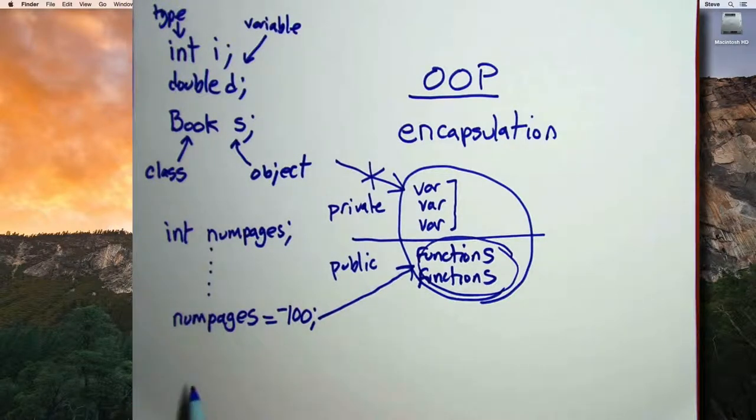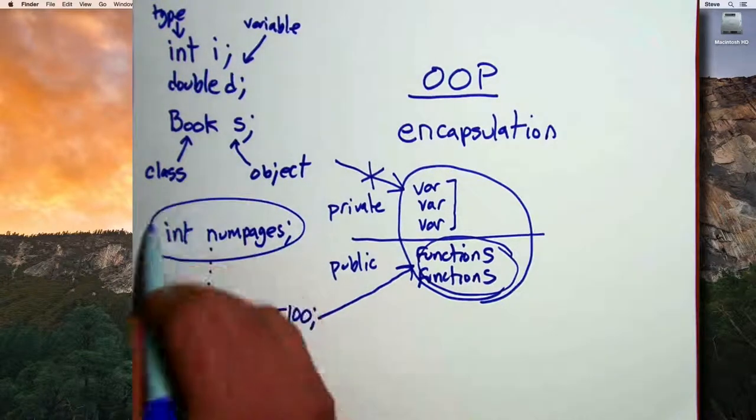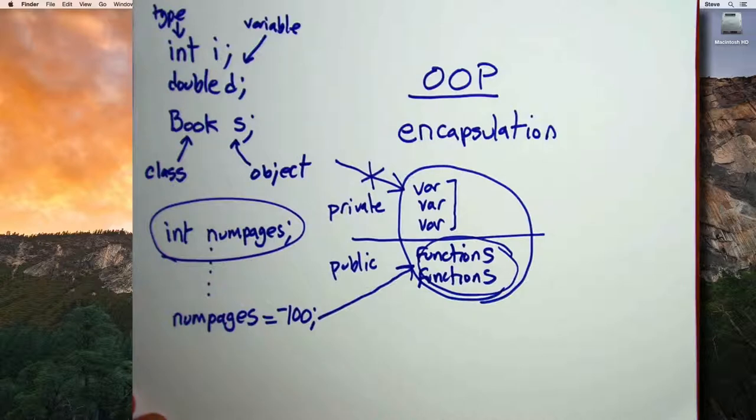That could have bad consequences in the rest of the code. And we might like to say numPages can't be a value less than 5, because once you put in the title page and the copyright page and so on, that the minimum number of pages in a book could be 5. And in regular C++, there's not any way to make an integer variable and to guarantee that its value is always going to be 5 or greater.